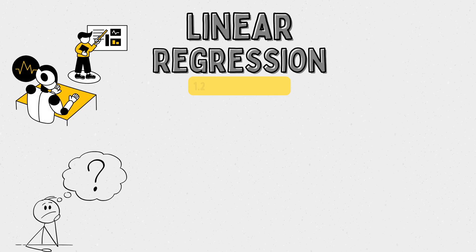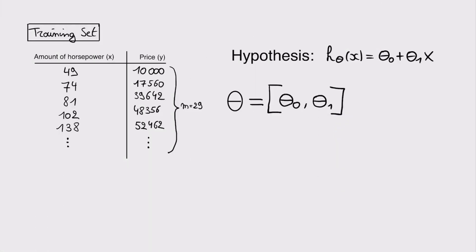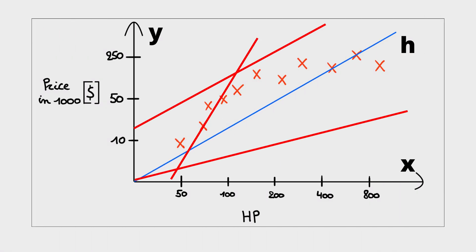Now we're going to explore the cost function of a linear regression model with one variable. Remember the training set from the previous video? The hypothesis for linear regression with one variable looks like this, with theta 0 and theta 1 as the parameters and x as the input variable. What we haven't seen yet is how we can choose these parameters — what line will fit best through our data? That's what we will see in this video.